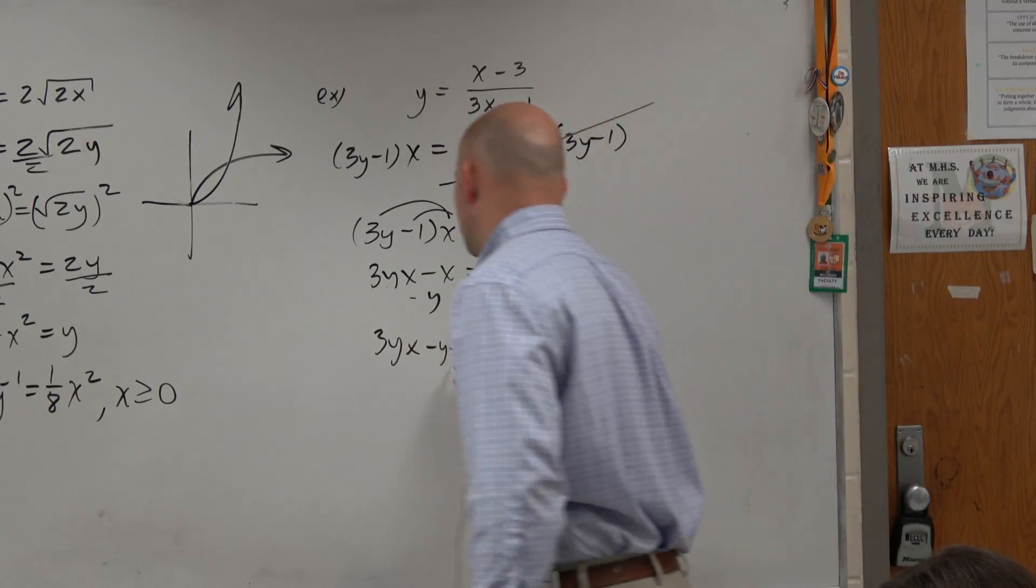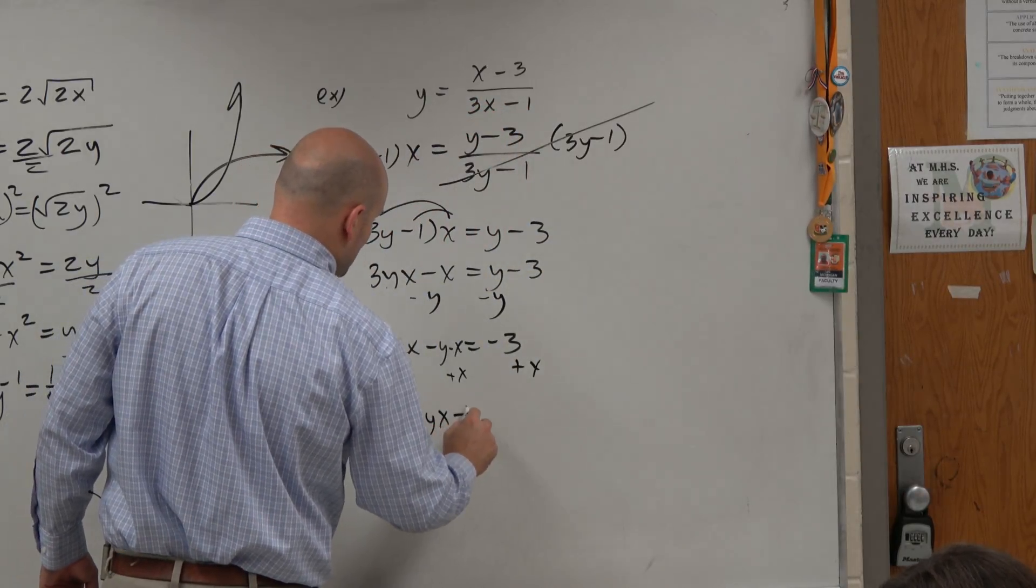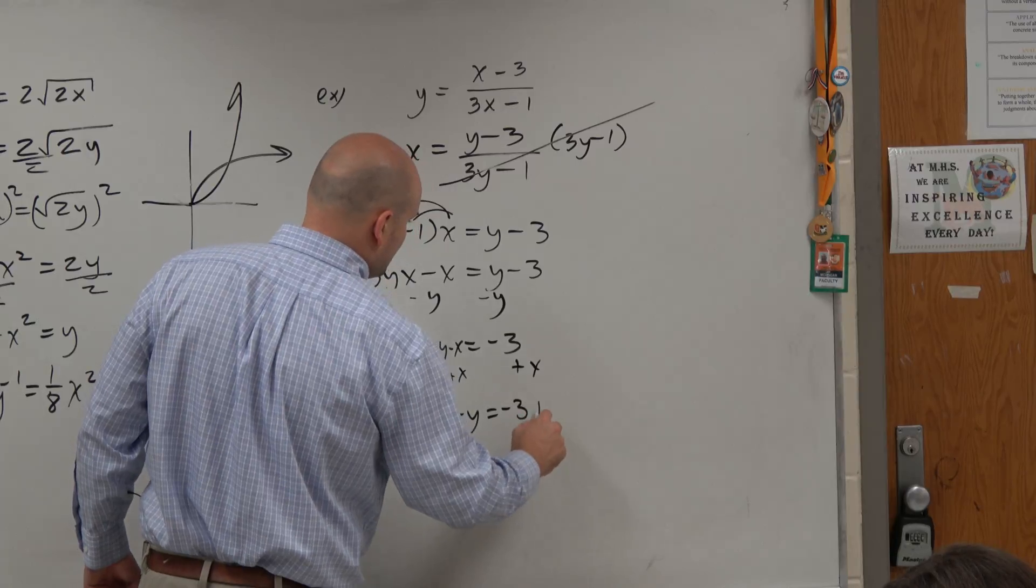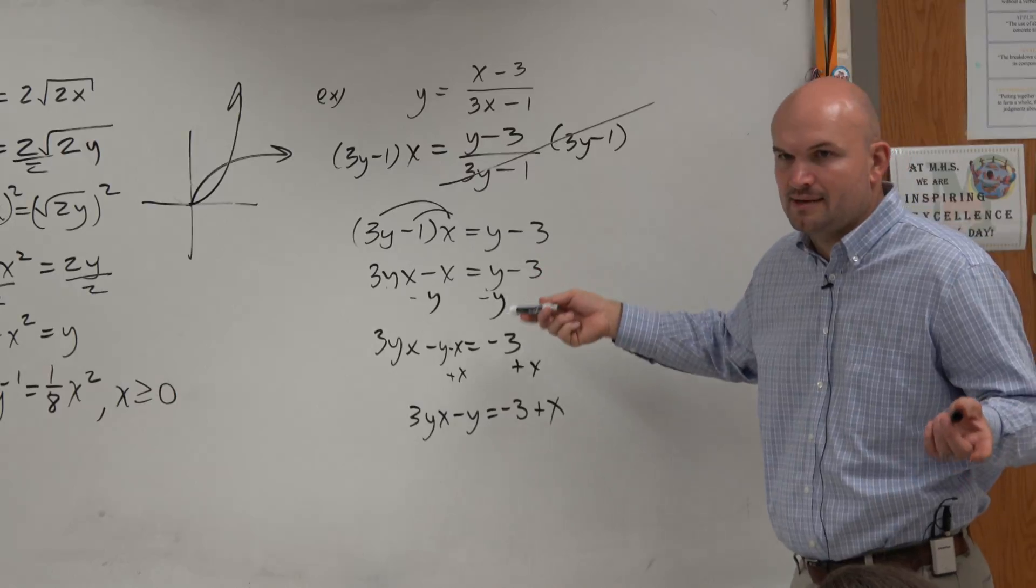Now, get the x to the other side. Add x, add x. 3yx minus y equals negative 3 plus x. So I just did the steps in the same thing.